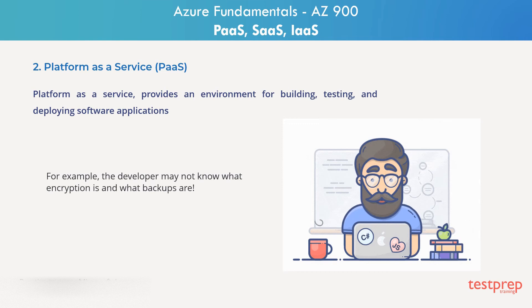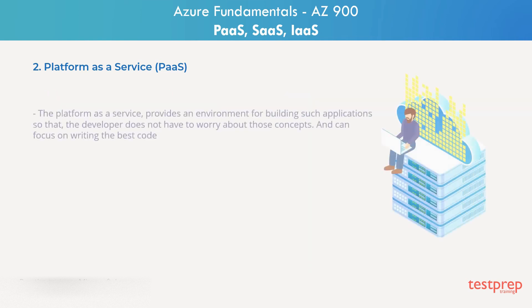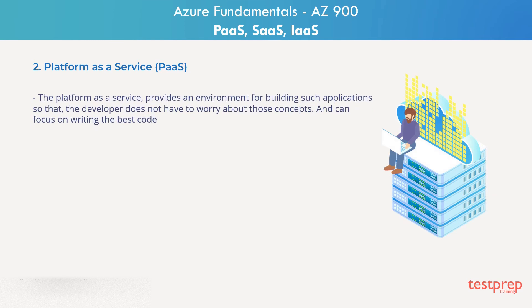For example, the developer may not know what encryption is and what backups are. The platform as a service provides an environment for building such applications so that the developer does not have to worry about those concepts and can focus on writing the best code. For example, when deploying a web application using platform as a service, you do not have to install an operating system or take care of Windows updates or install the antivirus on the machine. Platform as a service is a complete development and deployment environment in the cloud.